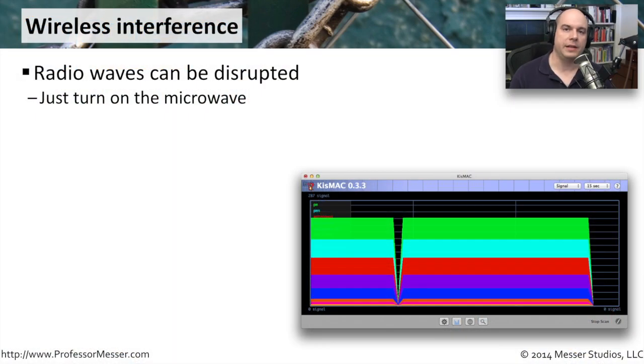One of the challenges with managing connectivity through a wireless network is that these are wireless signals, and they can be corrupted or interfered with. Even though it is a digital signal, you still have things that can create problems when you're trying to install wireless connections or maintain wireless connectivity.